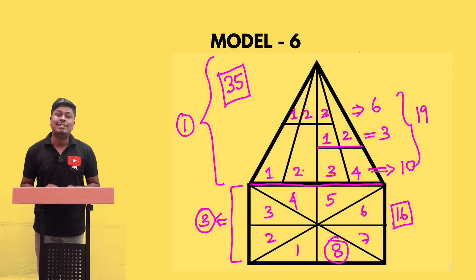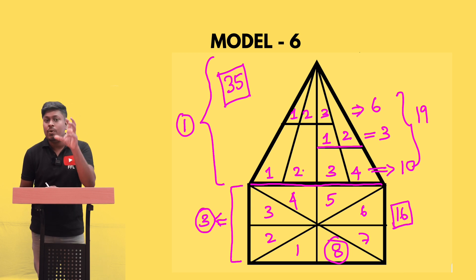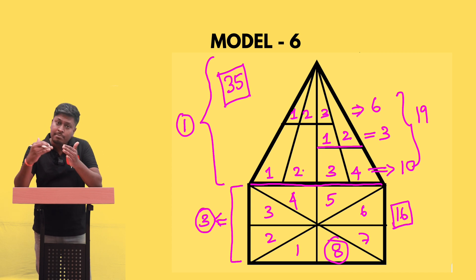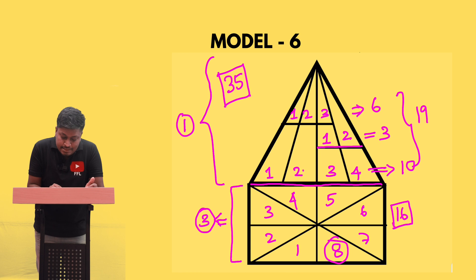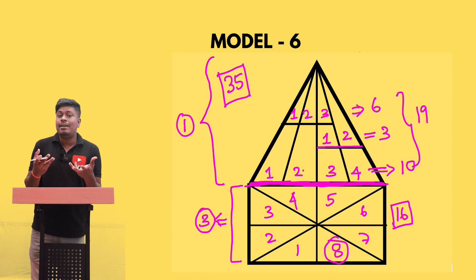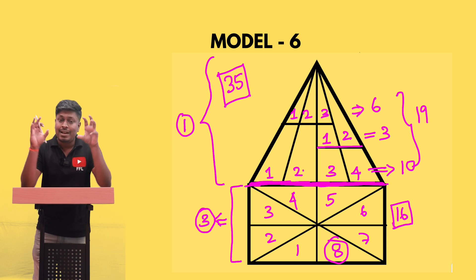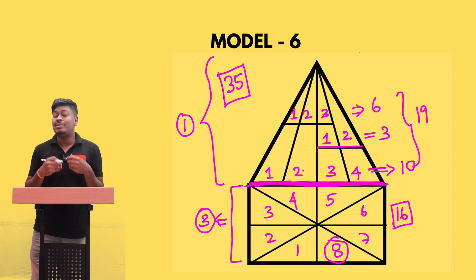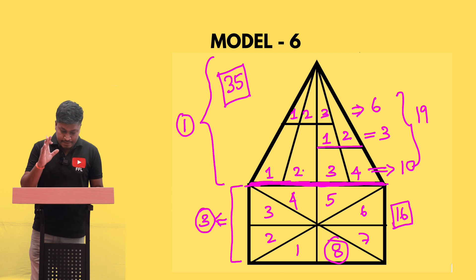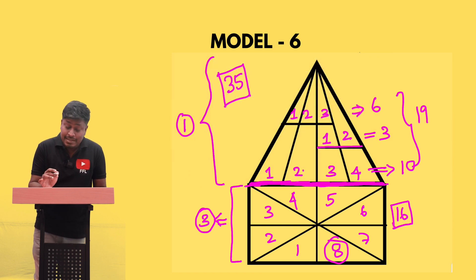Always remember — even while teaching every model, I've told you: when two images are connected, check the connecting area carefully. Model number one and model number three are connected here, and similarly model number two or model number four can be connected. In the connecting area, additional triangles can form. You can't use shortcuts there — you need to go with manual calculation. Let me check if there are any other triangles in that connecting part. You can see there is one triangle there.